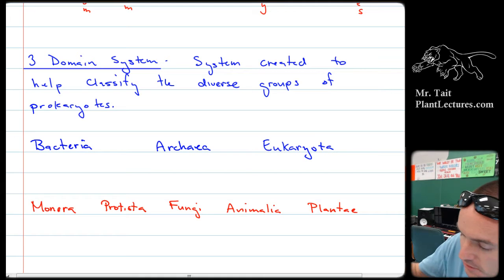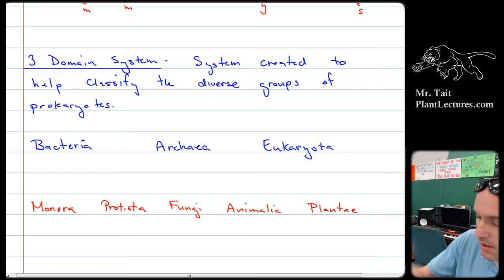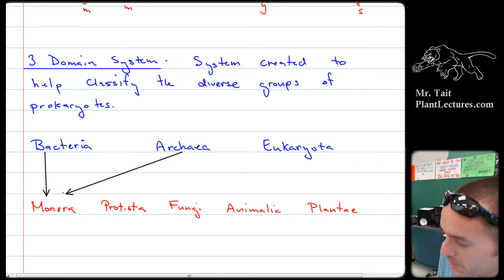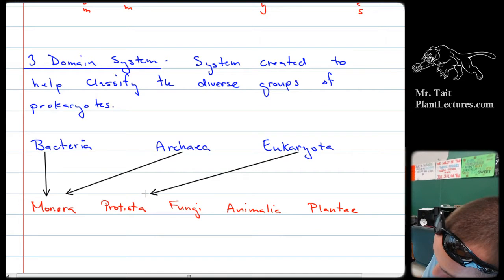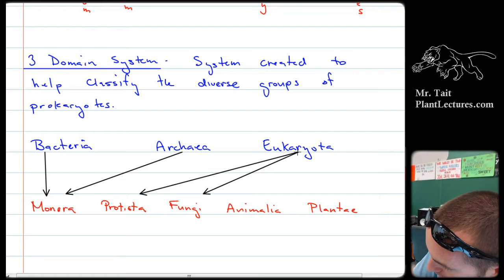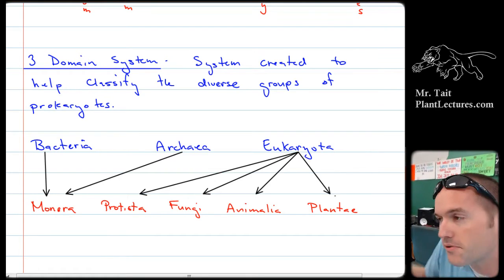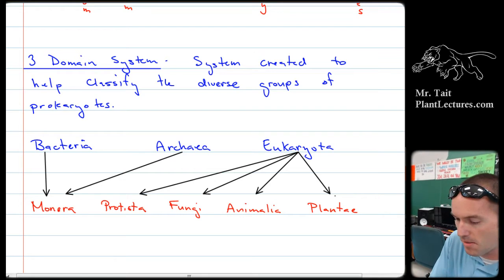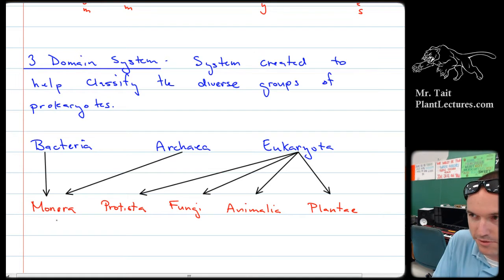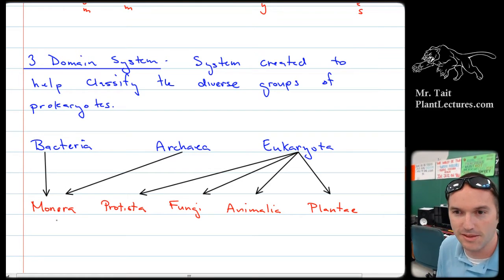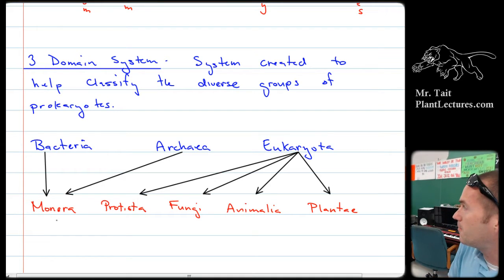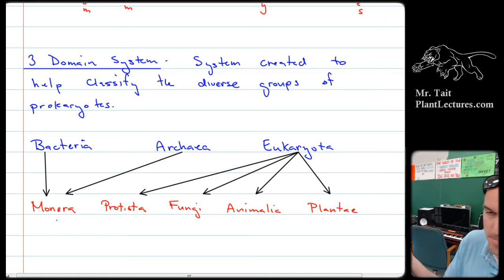The weird thing is when you look at how the five kingdoms are separated versus how the three domains are separated: bacteria belongs to the kingdom monera, archaea also belongs to the kingdom monera, and then eukaryota represents the other four kingdoms. You can see why it was necessary to add domain above kingdom — otherwise we just grouped all prokaryotes into monera. We know now that if you compared a bacterium to an archaea, it would be similar to comparing a giraffe to a cactus. They're extremely different, and grouping them together doesn't help from a taxonomy standpoint.